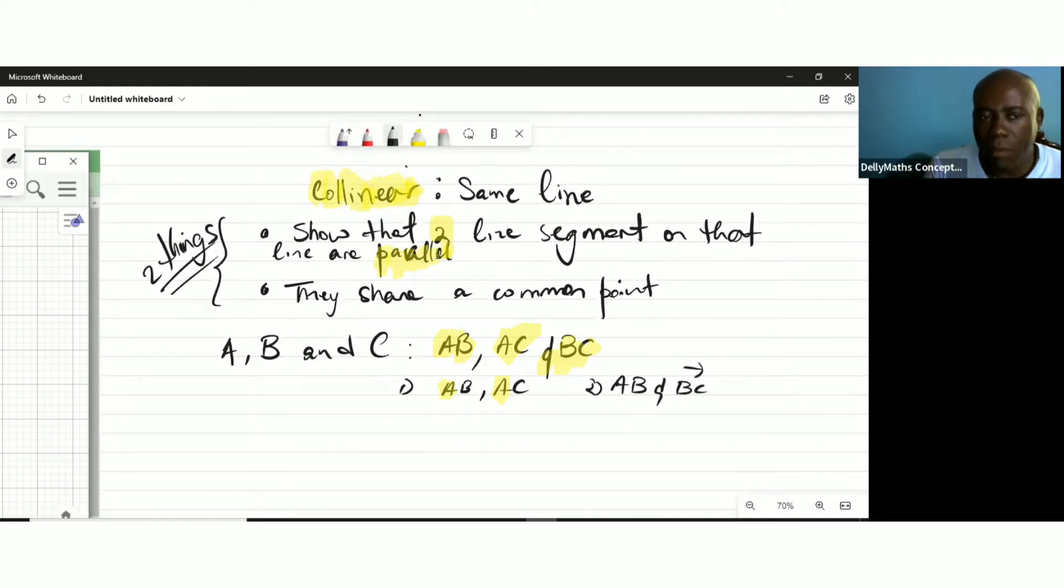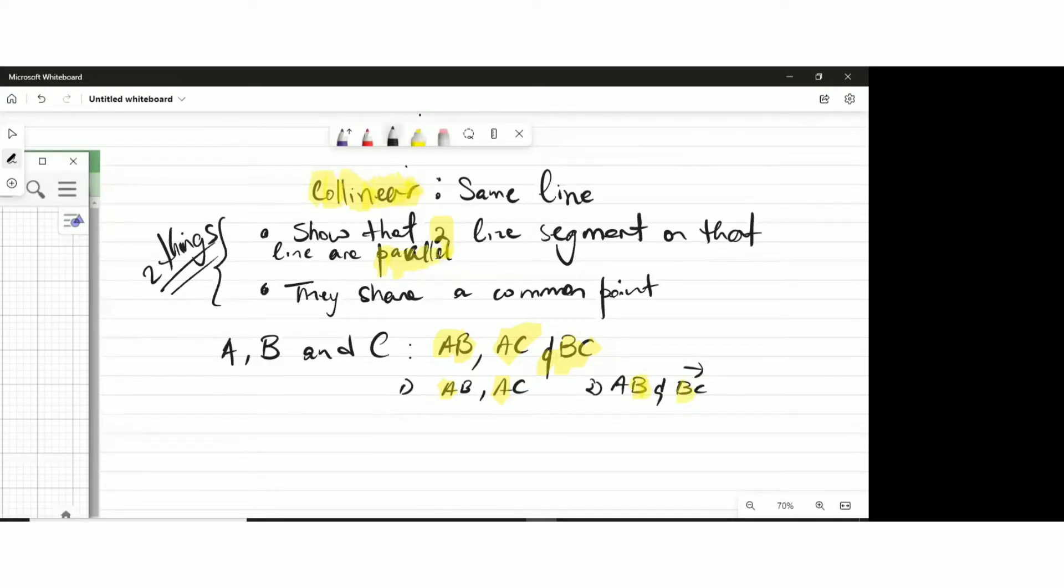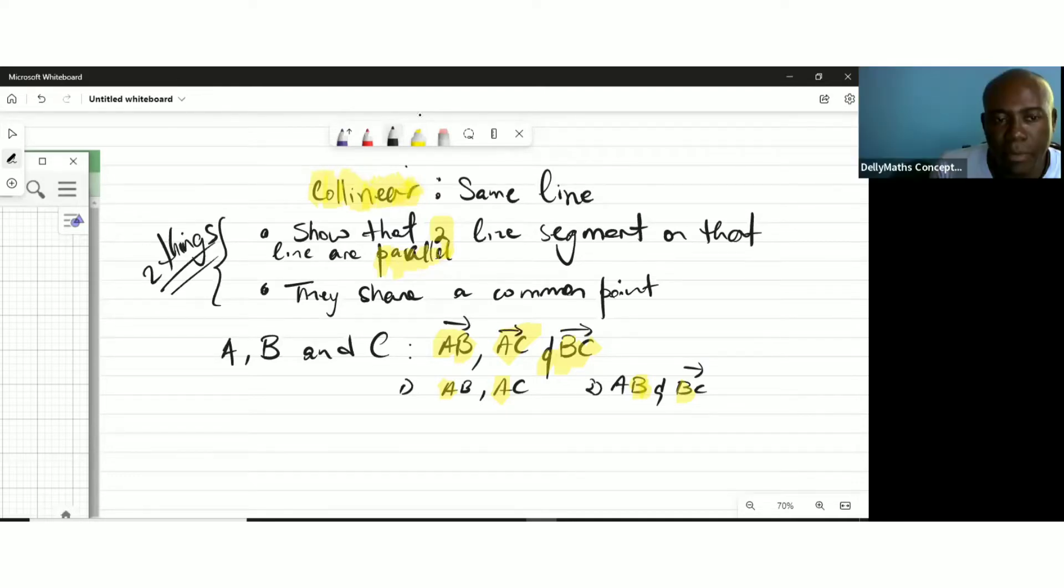Another student might pick AB and BC. When they pick AB and BC, the common point this time is B. When they find the vectors AB and BC, something will show parallelism. Then you can say they are parallel and they share a common point B.